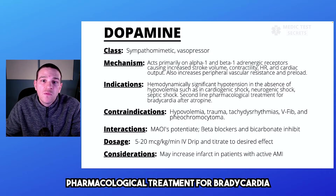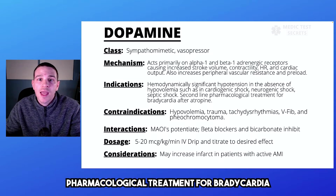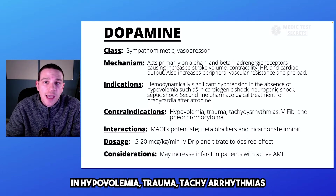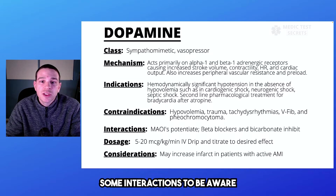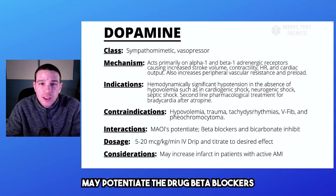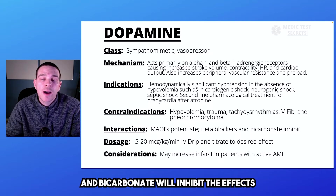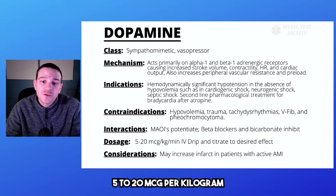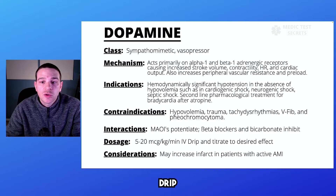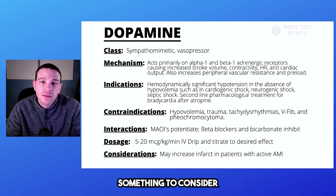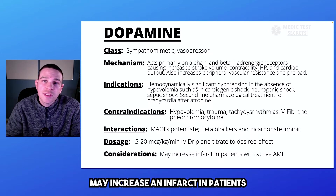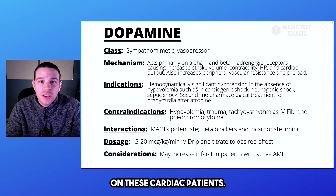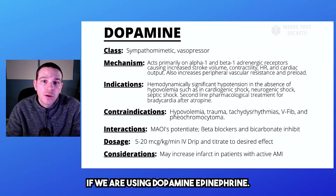Dopamine is also a second-line pharmacological treatment for bradycardia after atropine. It's contraindicated in hypovolemia, trauma, tachyarrhythmias, and V-Fib. MAOIs may potentiate the drug; beta blockers and bicarbonate will inhibit the effects of dopamine. The ACLS dosage is 5 to 20 micrograms per kilogram per minute IV drip, titrated to the desired effect. Something to consider: dopamine may increase an infarct in patients with an active MI, so getting a 12-lead is important.